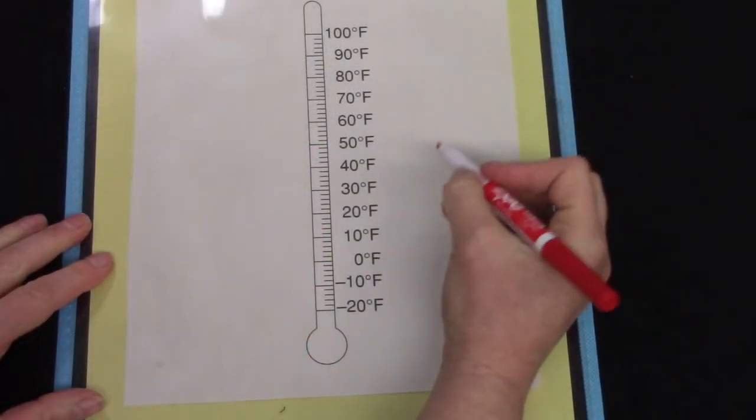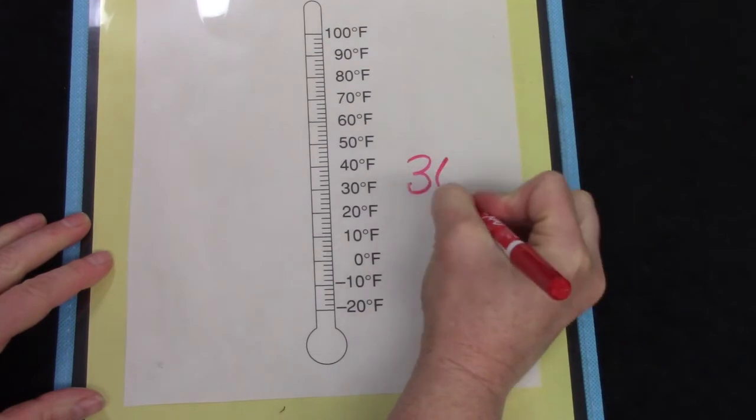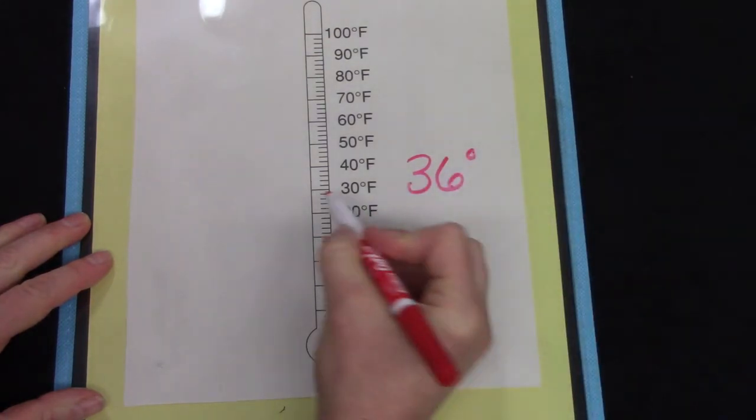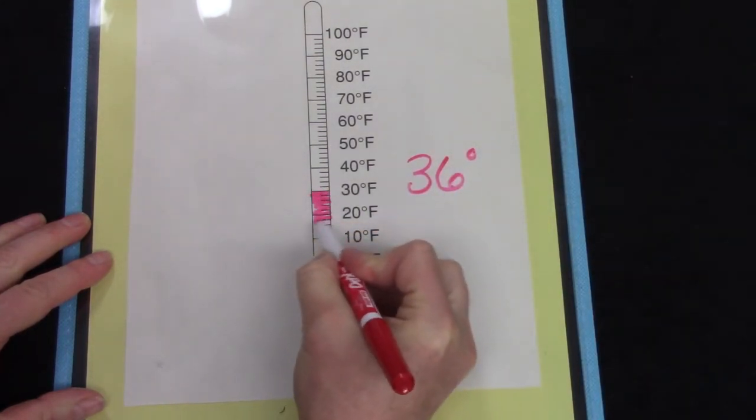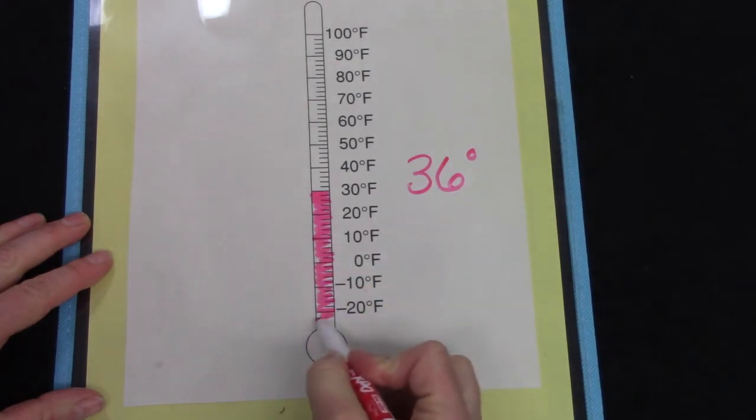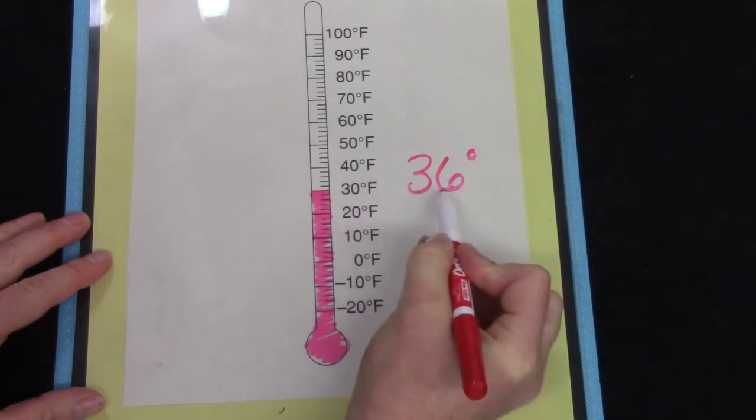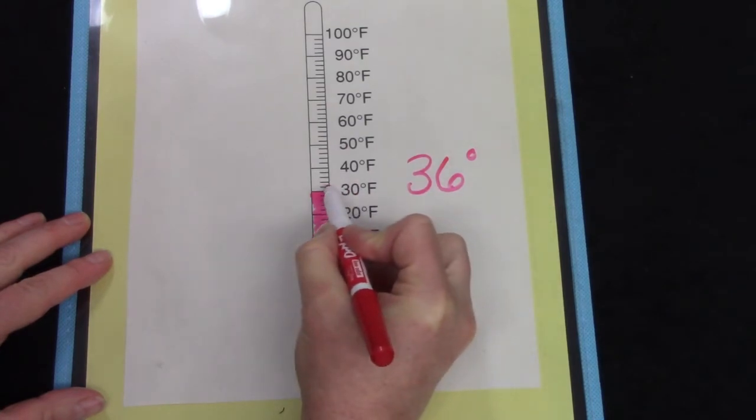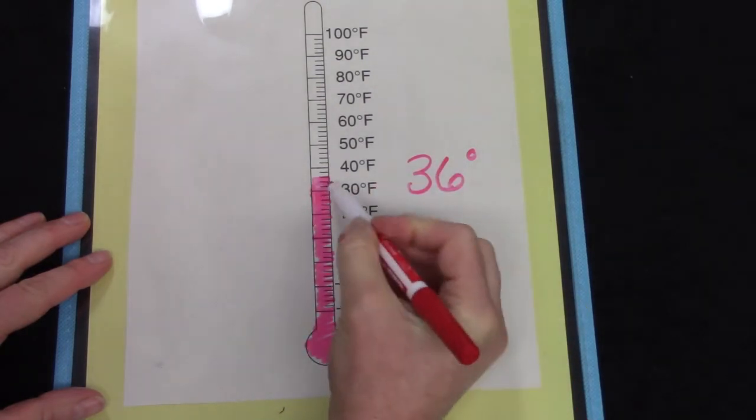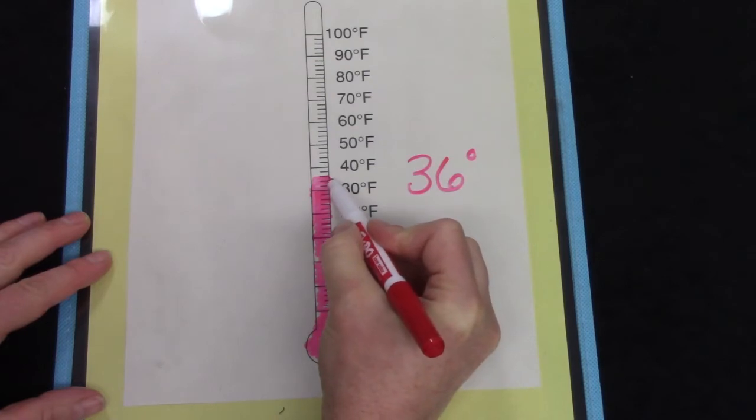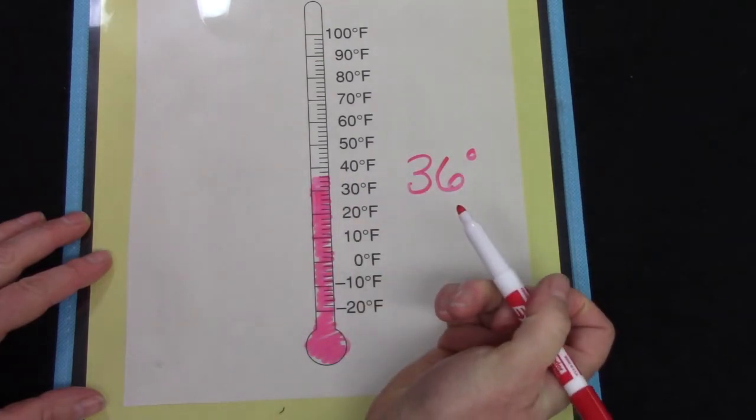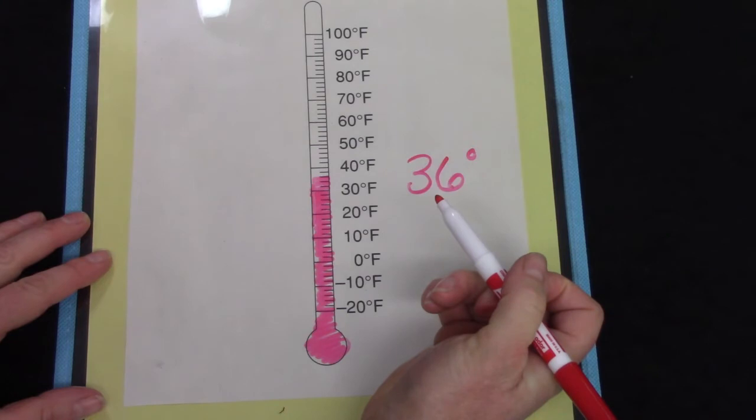Now I'm going to find 36 degrees. I'll fill in all the way up to 30. And now I have to find the 6. 36. Let's see. 32, 34, 36. 36 is just 1, 2, 3 jumps above 30 because each jump is 2 degrees.